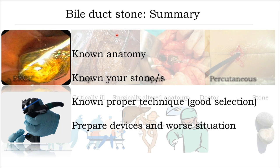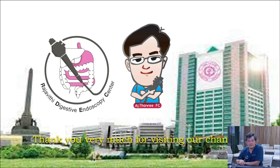In summary: for bile duct stone with ERCP endoscopic stone removal, you need to know the anatomy, know your stone's size and location, and know your bile duct. You need to know the proper technique and equipment available. Prepare everything, use good technique, and also prepare for the worst situation. Thank you very much for your attention. Hopefully you can enjoy and get some useful points to improve your practice. See you in the next FC ERCP series.